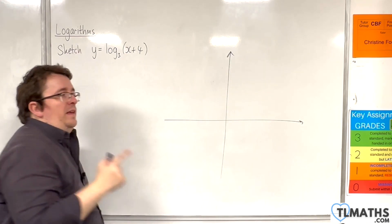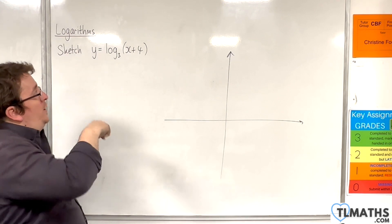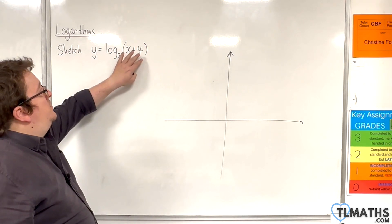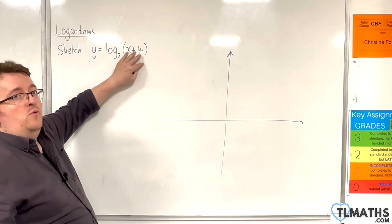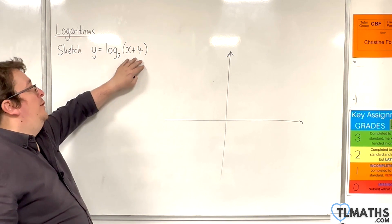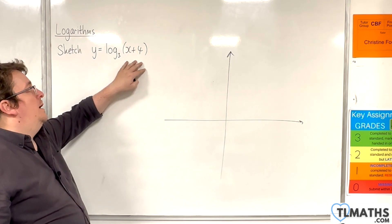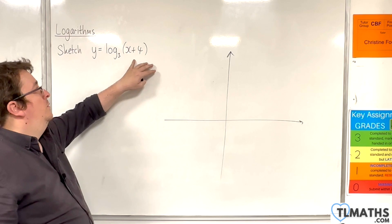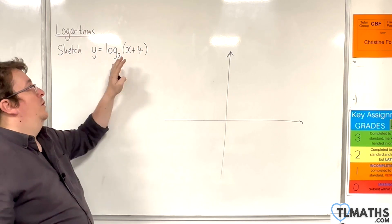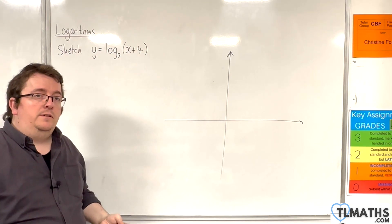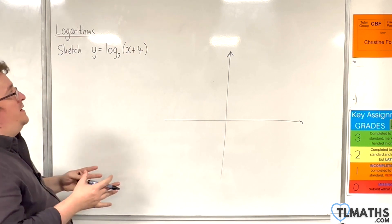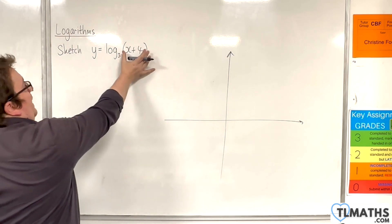You can spot this easily from the equation, because it is the value of x that will make that bracket 0. Because log base 3 of 0, so minus 4 plus 4, or log base 3 of 0, is undefined. The logarithm is undefined when this value is 0.